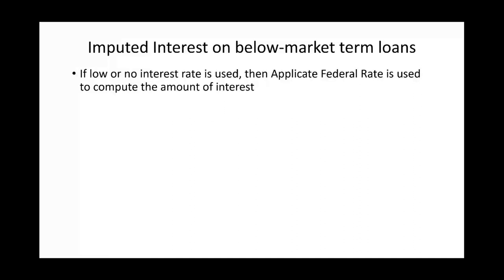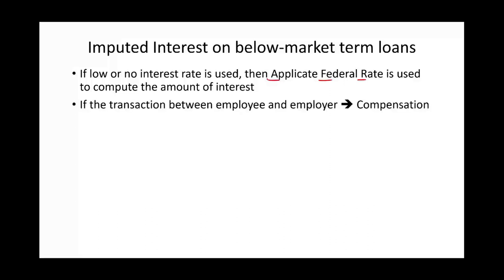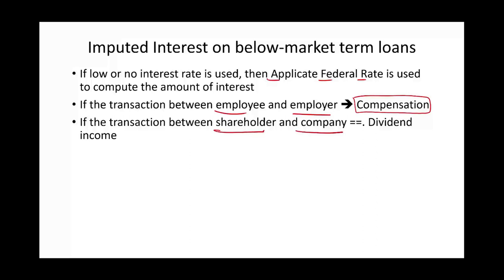Regarding imputed interest on below-market-rate loans: you cannot give an interest-free loan without tax consequences. If no interest is charged, you must use the applicable federal rate (AFR) to compute the imputed interest. If the transaction is between an employer and employee, the imputed interest is treated as compensation — a form of additional wages. If the transaction is between a company and a shareholder, the imputed interest is treated as dividend income.